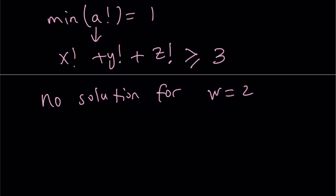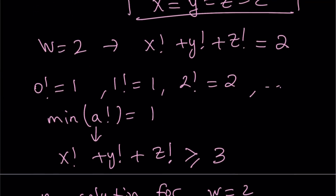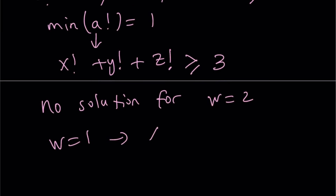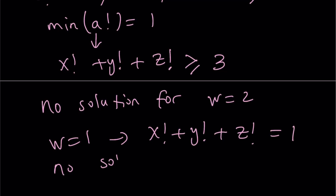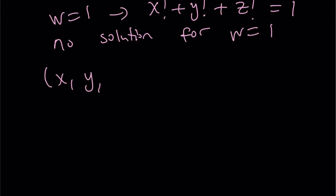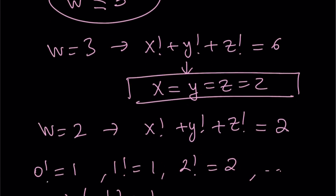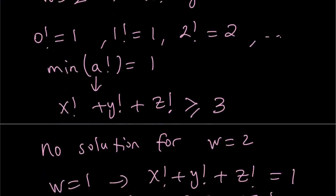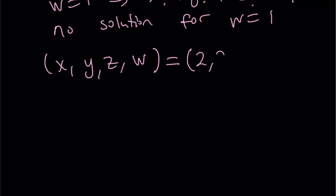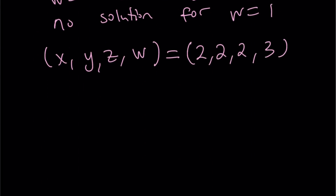What about w equals one? There are no solutions for w equals one either, since the sum of three factorials is at least three. Therefore the only solution is x equals two, y equals two, z equals two, and w equals three. The only quadruple that satisfies this equation is (2, 2, 2, 3).